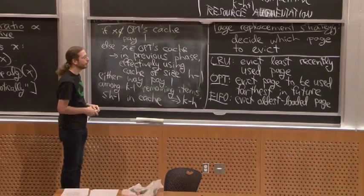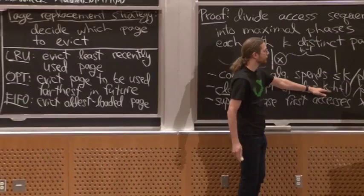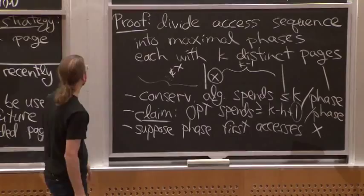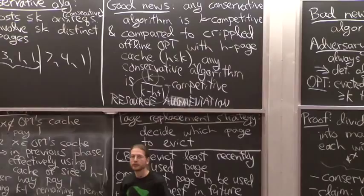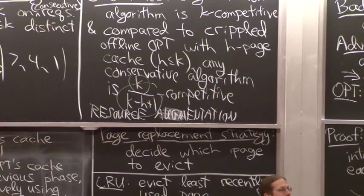Adding everything up: conservative algorithm pays k per phase, OPT pays at least k minus h plus 1 per phase, the number of phases cancels, and the ratio is k over k minus h plus 1.